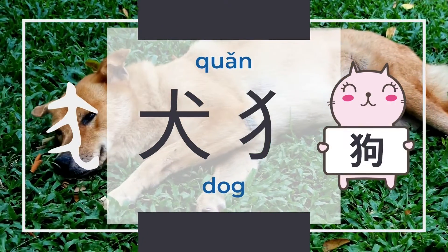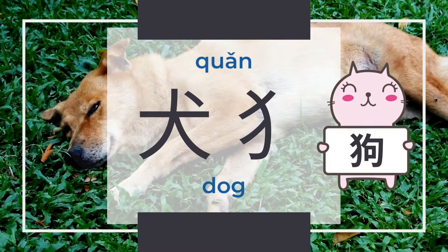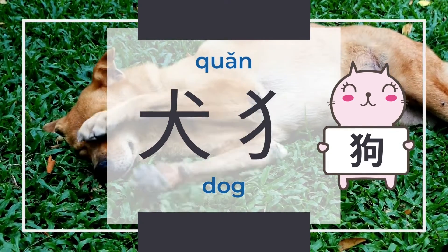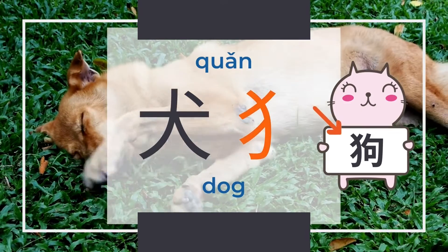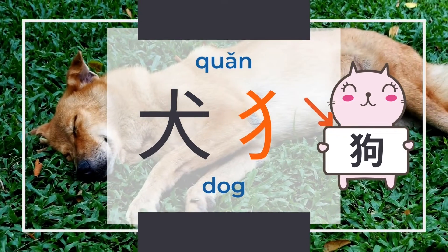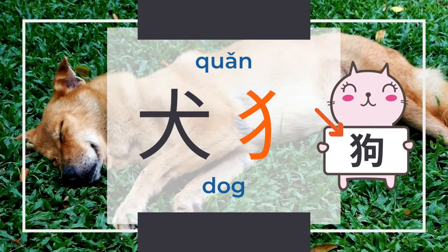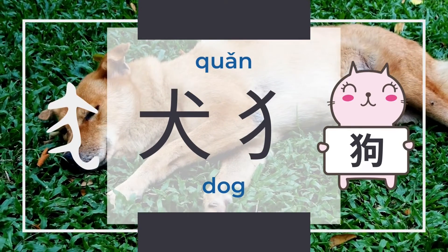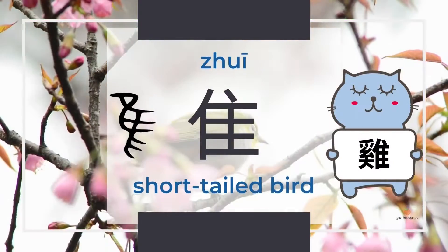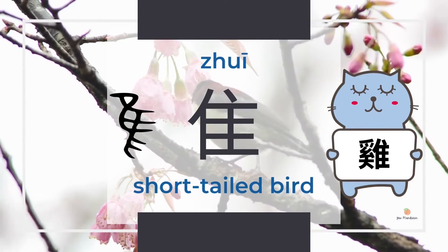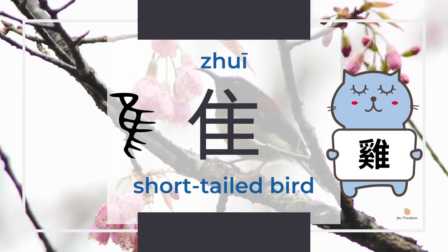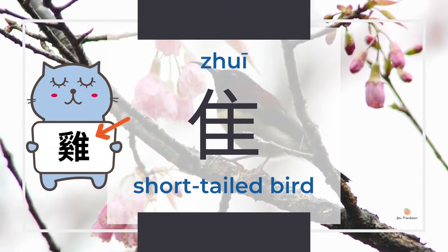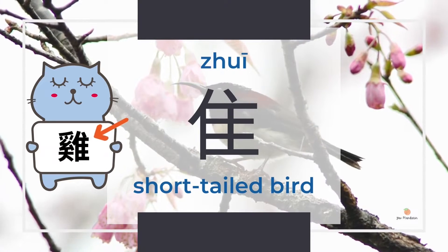The dog radical 犬 is a pictogram with two forms. It is mostly combined with other characters as a component, and on the left side of characters it looks like a dog sleeping on the ground. The radical 隹 means small bird or short-tailed bird — it is a pictogram that mostly appears on the right part of Chinese characters, and sometimes on the top.